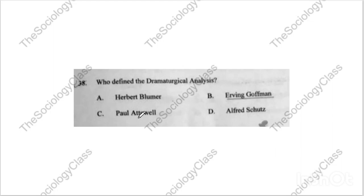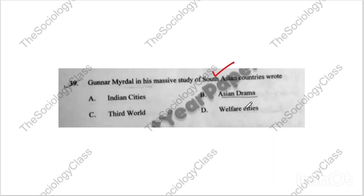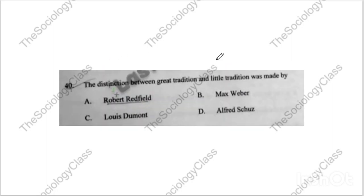Question thirty-eight on dramaturgical analysis — the correct answer is B — Erving Goffman. Question thirty-nine: Gunnar Myrdal's famous study was on South Asian countries. A question comes quite frequently about it. The correct answer is B — Asian Drama. Question forty: 'The distinction between great tradition and little tradition was made by...' Robert Redfield, Max Weber, Louis Dumont, or Alfred Schutz? The correct answer is A — Robert Redfield.